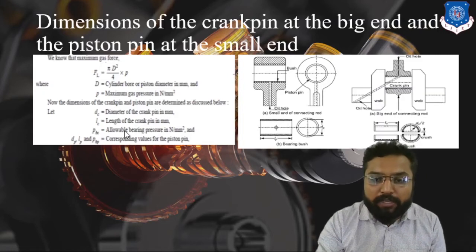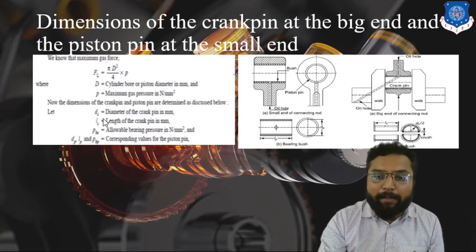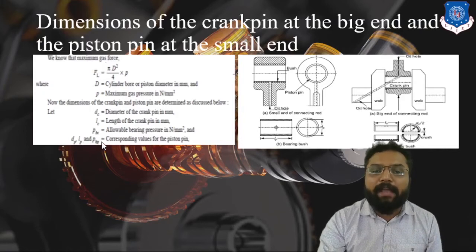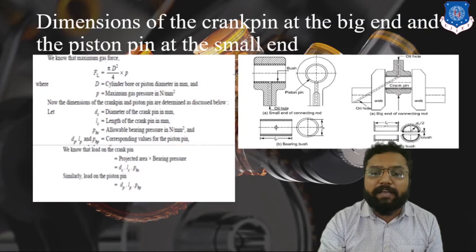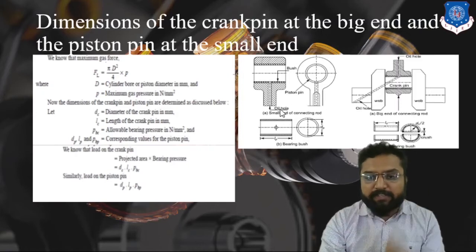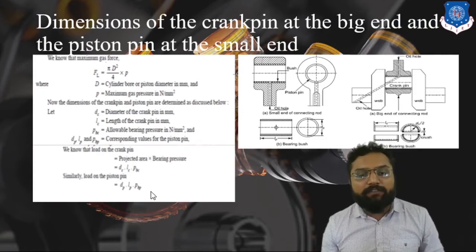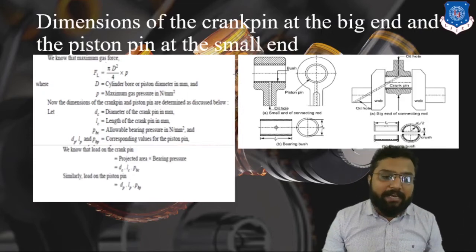There will be a rubbing effect between your piston pin and small end, and crank pin and big end, creating bearing pressure. We consider the allowable bearing pressure for crank pin as well as piston pin. DC is the diameter of the crank pin, LC is the length of the crank pin. For the piston pin, we have its diameter, length, and bearing pressure. The projected area under the crank pin is diameter × length × bearing pressure, and similarly for the piston pin.